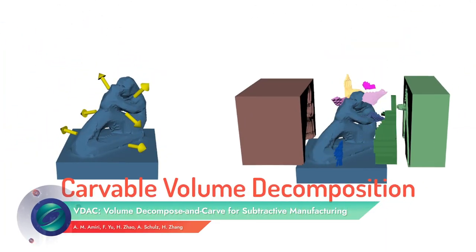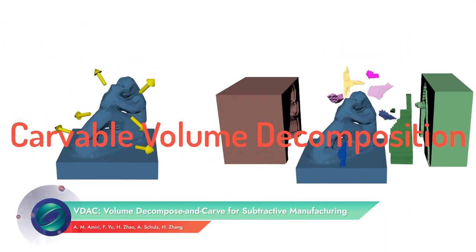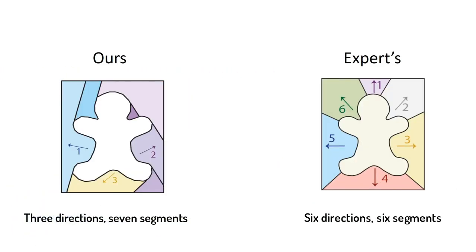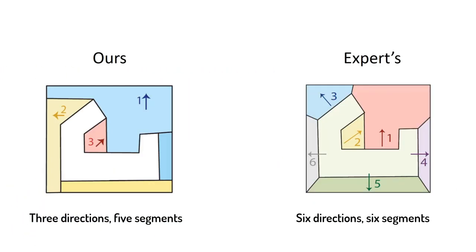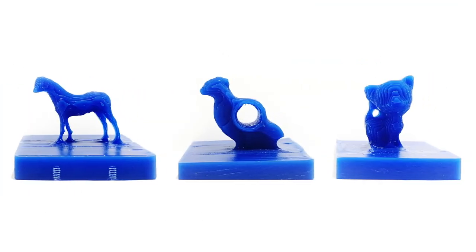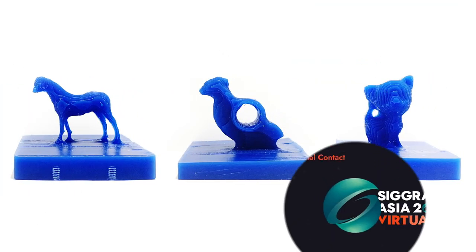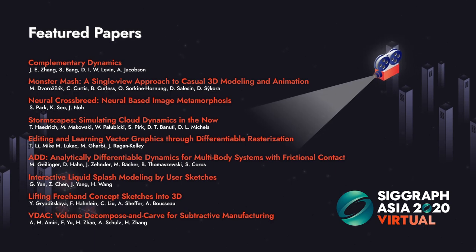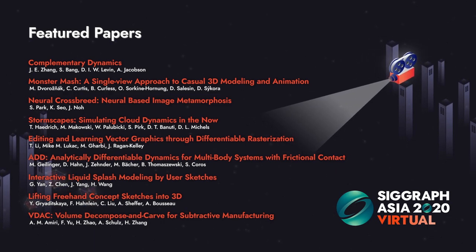Ever wondered how 3-axis CNC machining can produce complex 3D free-form objects with Hygenus? Come and find out the details of these innovations and a lot more at SIGGRAPH Asia 2020 online from the comfort of your own home.